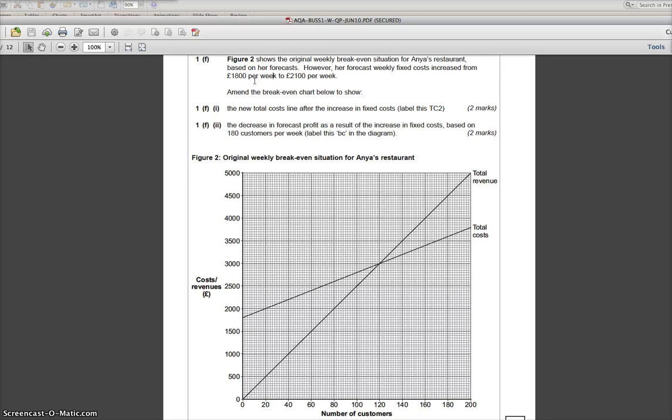This is actually a really easy thing to do because the first thing they ask you to do is to calculate the new total cost line after the increase in fixed costs and label it TC2. All that you actually have to do is move up £300 from here. So this particular point is on £1,800, which corresponds with that £1,800 per week there. So all that you have to do is move up £300 until you reach £2,100, which will be two squares above the £2,000 because it's two squares for each £100. Make a mark there, and then at the other end of the graph move up £300 here and make another mark, and then join those two lines together. So you would have a line going from approximately there, parallel with the existing total cost line and finishing up there. And that's all you're actually doing for those first two marks.